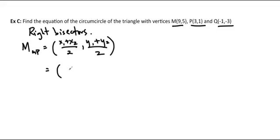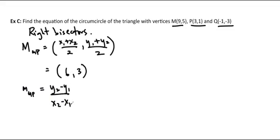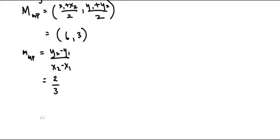So 9 plus 3 is 12, divide by 2 is 6. And 5 plus 1 is 6, divide by 2 is 3. So the midpoint of MP is (6, 3). Now y2 minus y1 over x2 minus x1 gives us the slope: 5 minus 1 over 9 minus 3, which is 4 over 6, so 2 over 3. The perpendicular slope is negative 3 over 2.